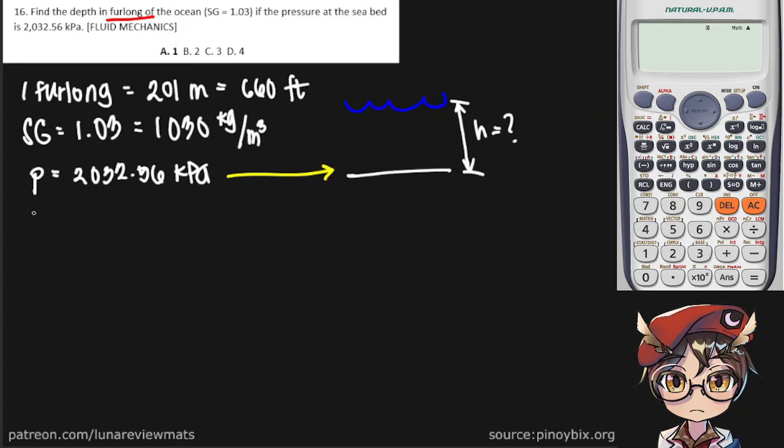Now if you remember, the pressure at a certain depth is given by p equals rho g h. The density of the substance multiplied by the gravitational acceleration multiplied by the depth.